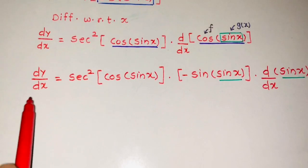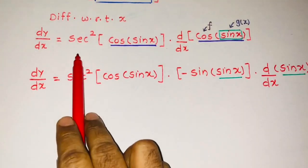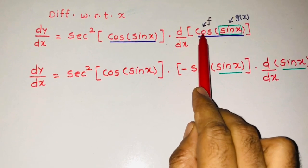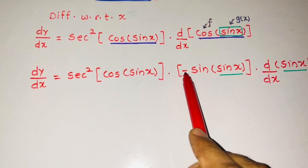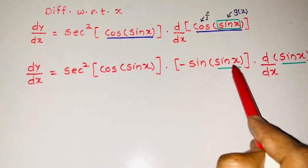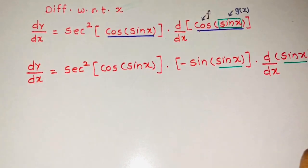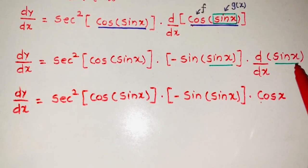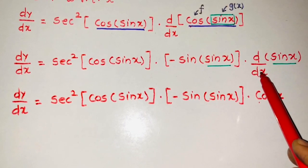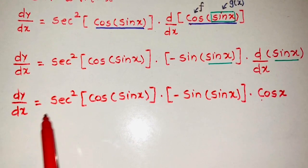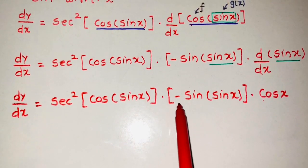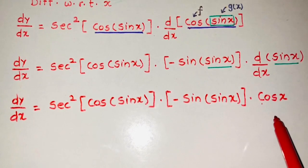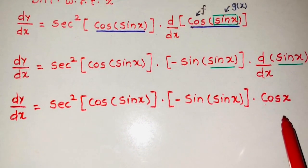So the next step: dy by dx equals the first part sec squared of cos of sin x, times the derivative of cos which is minus sin of the box, that is sin x, into the derivative of that box. Since sin x is a standard function, we differentiate it directly to get cos x. So the final answer is: dy by dx equals sec squared of cos of sin x into minus sin of sin x into cos x.